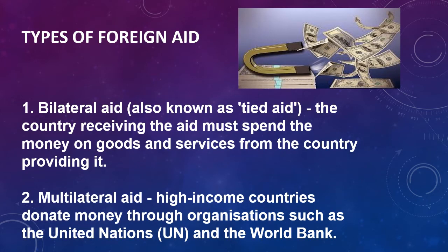Types of foreign aid: foreign aid is classified into two types — bilateral aid and multilateral aid. Bilateral aid, also known as tied aid, requires the country receiving the aid to spend the money on goods and services from the country providing it — the money is only spent back to the providing country. Multilateral aid is offered by highest authorities like the World Bank or UN organizations and can be used for any country in the world.